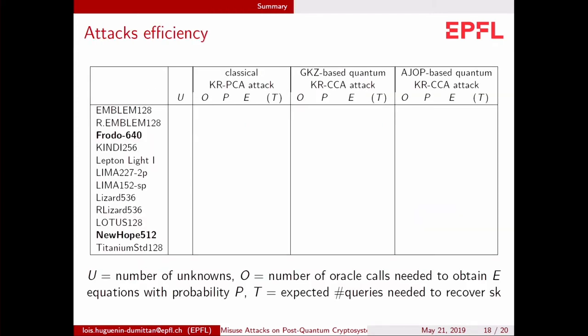So these are the schemes we considered. Frodo and New Hope are the two that passed to the second round of the NIST process. U is the number of unknowns. Typically, if the secret key is some vector, it's the number of components in the vector. O is the number of oracle calls we need to obtain E equations with probability P. And T is the expected number of queries needed to recover the secret key.